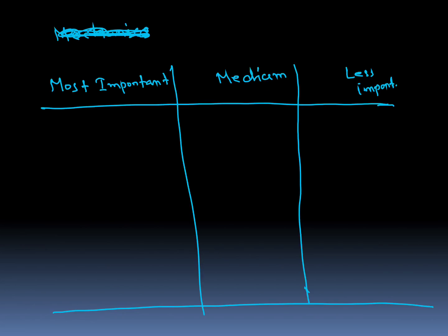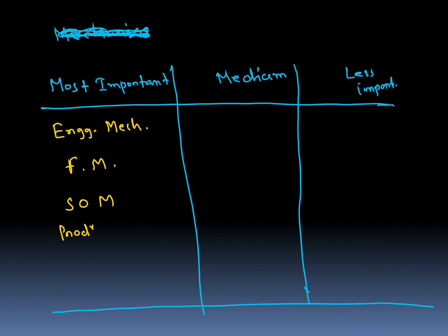Looking at most important subjects: Engineering Mechanics (around 8 questions), Fluid Mechanics (around 13 questions — including fluid machines), Strength of Material (14 questions), Production plus Metrology (9–10 questions), and Material Science (8 questions) — these are of maximum importance.